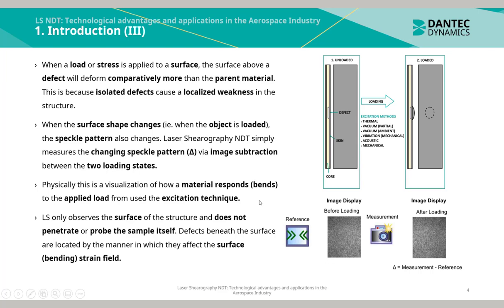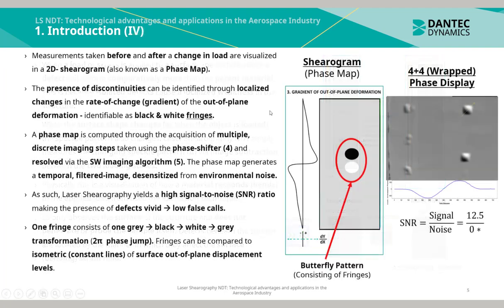Laser Shearography only observes the surface of the structure and does not penetrate or probe the sample itself. Defects beneath the surface are located by the manner in which they affect the surface bending strain field. Measurements taken before and after a change in load are visualized in a 2D shearogram, also known as a phase map. The presence of discontinuities can be identified through localized changes in the rate of change or gradient of the out-of-plane deformation, identifiable as black and white fringes.